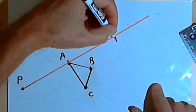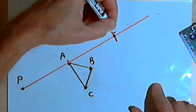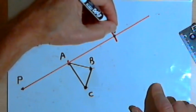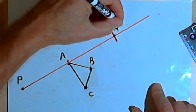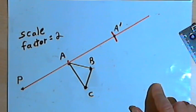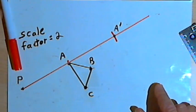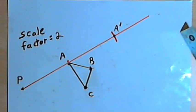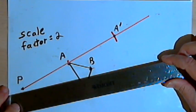That point where the arc intersects the line is going to be point A prime of my dilated image. Now I'll repeat that process two more times for each of the other points on the original image.